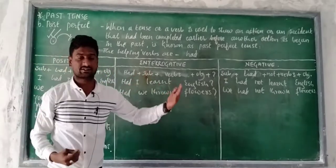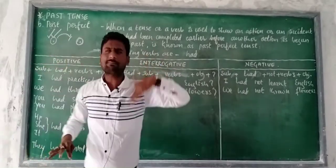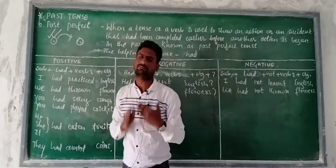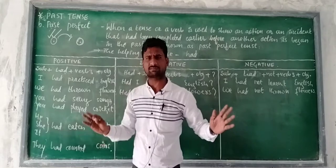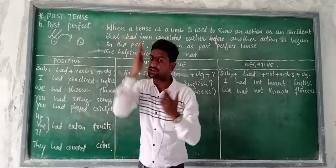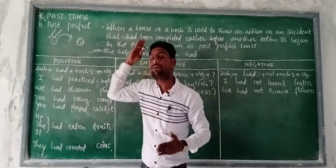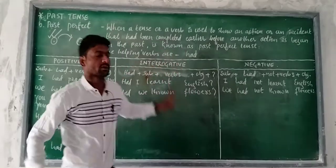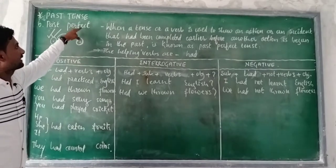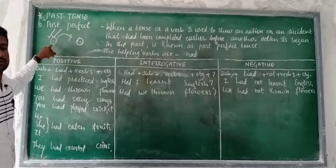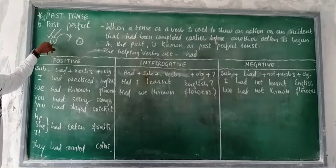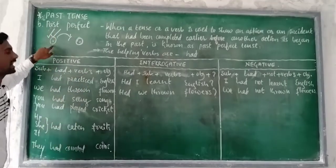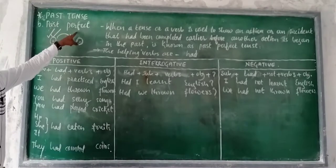In the past, two actions were completed. We are going to study the first action which is completed in the past at first — that means it happened earlier. So studying about the earlier action is Past Perfect — got it?